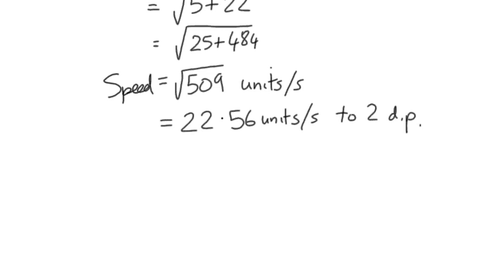It might be you're interested in keeping it an exact value. It might be, from a practical point of view, you're interested in its decimal approximation. But either way, that's how we can find the speed of an object using our parametric functions. There we go.